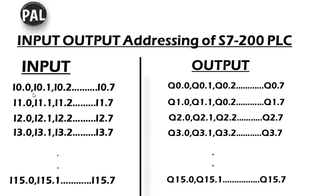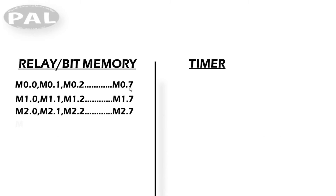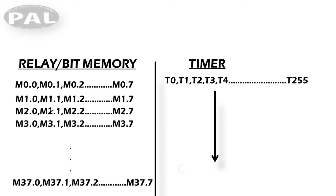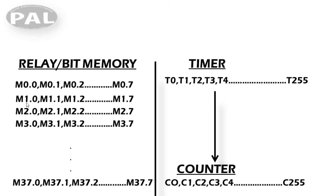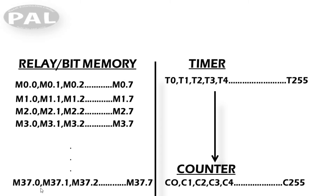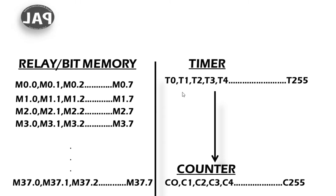Our next topic is the relay or bit memory (M). This is a very important addressing area. Memory addressing is also in octal format: M0.0 to M0.7, then M1.0 to M1.7, continuing all the way to M37.0 — a huge number of memory bits available in any S7-200 PLC.